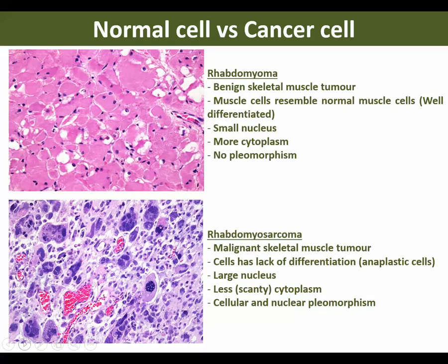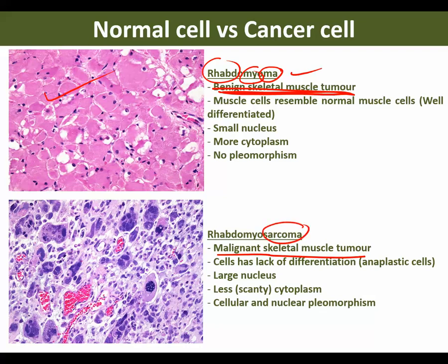This is the benign skeletal muscle tumor. Rhabdo means skeletal muscle, myo means muscle, oma means benign — so it is rhabdomyoma, a benign skeletal muscle tumor. If I keep this and ask for the diagnosis, you write rhabdomyoma. This is the malignant skeletal muscle tumor — sarcoma means malignant cancer. It is from skeletal muscle, so it is rhabdomyosarcoma.